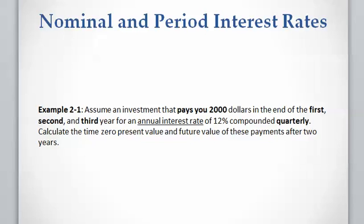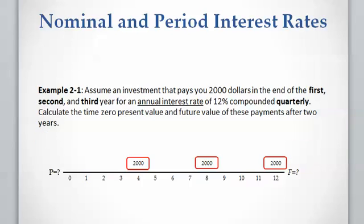The first thing we need to do is draw the timeline and locate the payments on it. The smallest interval in the timeline should be the compounding period, which is a quarter in this example. The project lifetime is three years, so we should have 12 quarters on the timeline. The first payment is at the end of year one, which is the fourth quarter. The second payment is at the end of year two, which is the eighth quarter. The third payment is at the end of year three, which is the twelfth quarter.